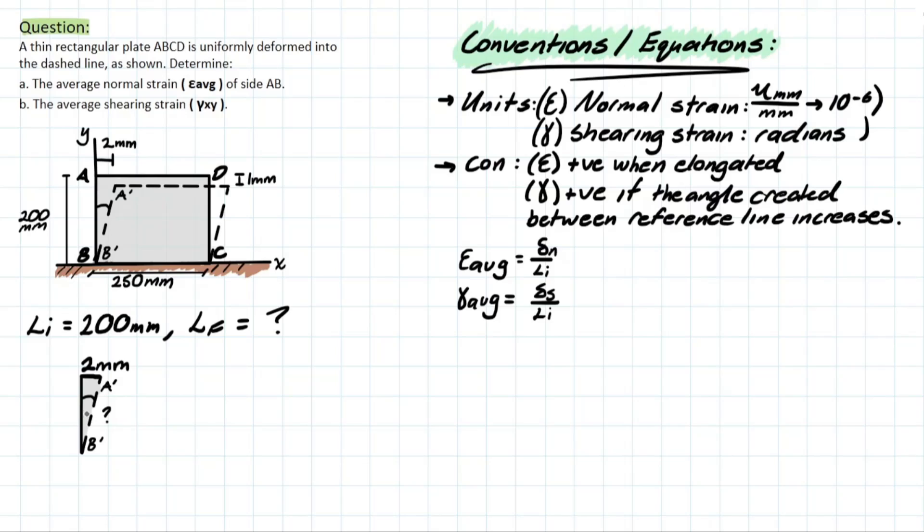So we can actually draw this triangle here and see what we're dealing with. So now that we have the triangle drawn, we can actually suggest a new length for that side, which is going to be 200 mil subtracting that 1, which is compressing the element downwards with respect to this axis. And that is going to equal 199 mil.